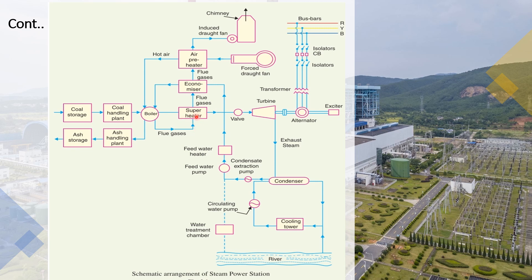The steam passes through the main valve to control flow to the turbine. Superheating ensures maximum moisture is removed so the turbine blades are not corroded. The superheater provides the advantage of increased thermal efficiency.